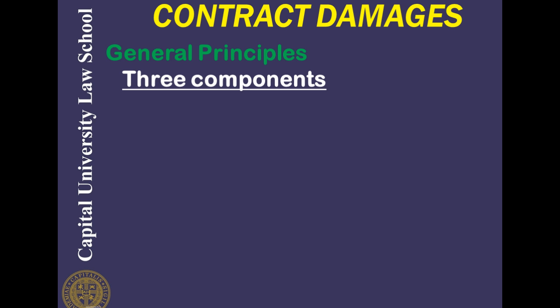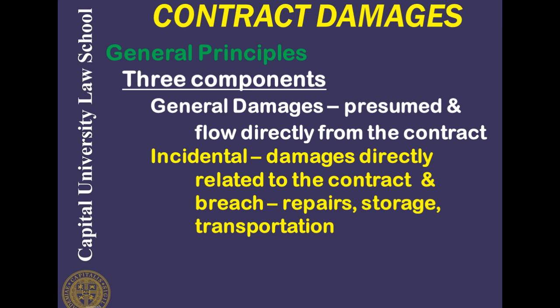There are generally three components to contract damages. There are general damages, which are presumed to flow directly from the contract — those damages that occur directly from the breach, such as failure to deliver or failure to deliver conforming goods. There are also incidental damages, which flow directly and are related to the contract but are different from the actual breach, such as repairs, storage, or transportation of defective goods.